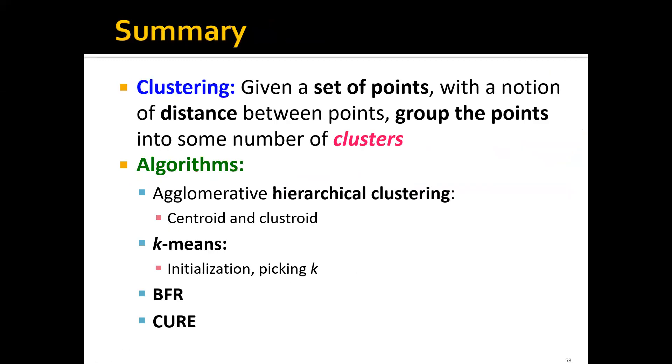To summarize, in this lecture we talked about the problem of clustering: given a set of points with a notion of distance between them, we want to group the points into some number of clusters. We covered agglomerative hierarchical clustering, and discussed centroid and clustroid. We also introduced the K-means algorithm and its two extensions, BFR and CURE. BFR mainly handles cases where we have very large datasets that can't fit in memory, and CURE mainly handles problems where we have clusters of arbitrary shapes.